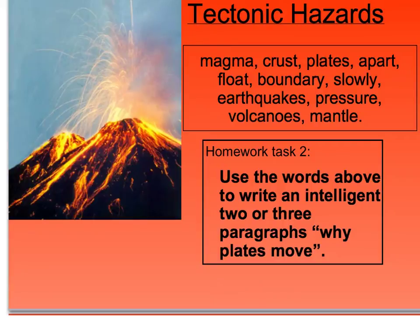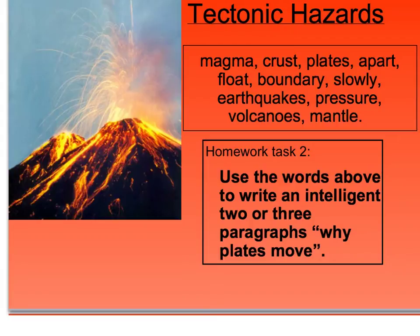Unfortunately, when I typed this, I forgot one key phrase and one key process from the box above. The words listed are: magma, crust, plates, apart, float, boundary, slowly, earthquakes, pressure, volcanoes, and mantle. I'd like you to work out which one I forgot — the one I forgot was convection currents. So although the instruction says use the words above, I'd also like you to use the phrase 'convection currents' as well.